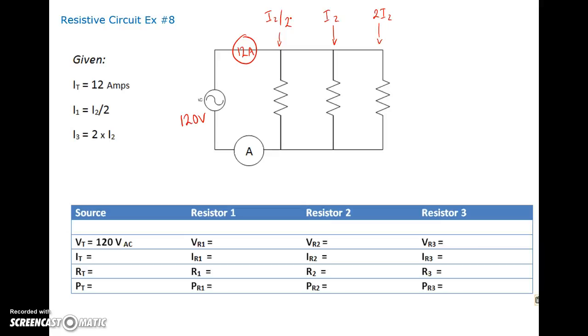So we have to do some transposition here in order to find I2, and once we find I2, then we can drop it in and find everything else in the circuit. So to save some time, you can pause the video here and see if you can work through to find your second current and all the other values in the circuit.